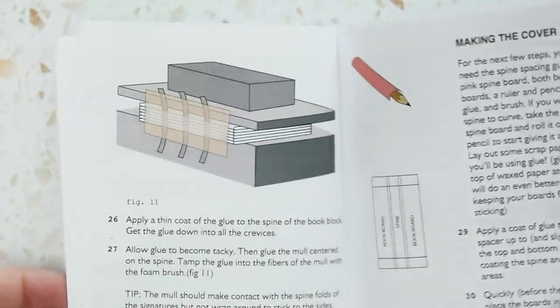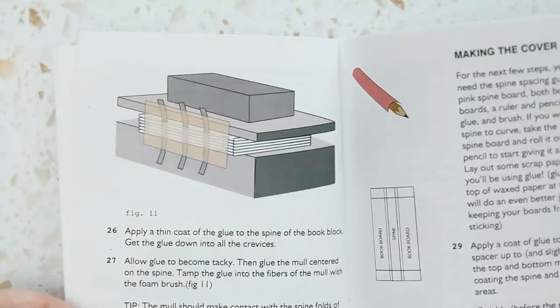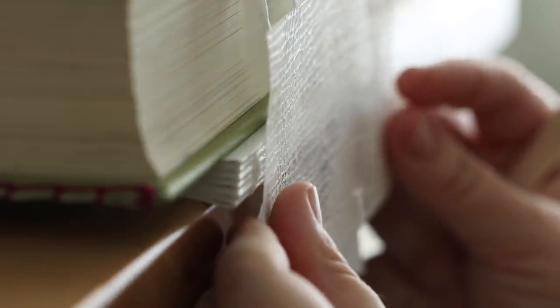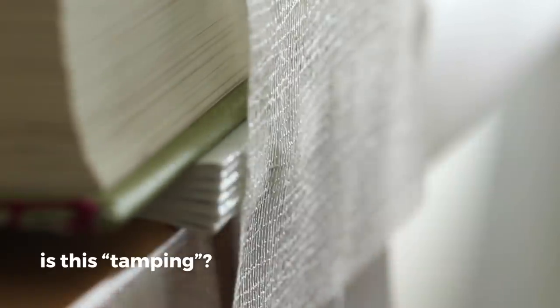The instructions say to allow the glue to become tacky, and then glue the mull centered on the spine, and tamp the glue into the fibers of the mull with the foam brush.